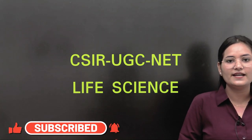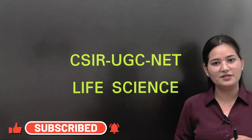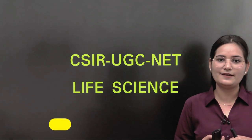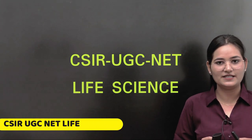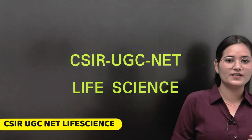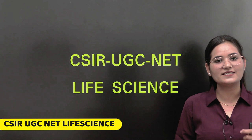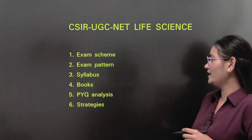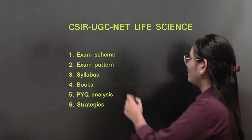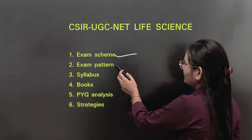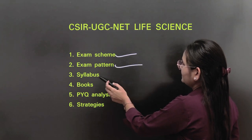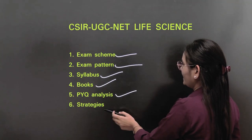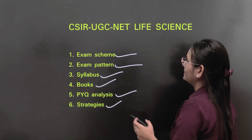CSIR UGC NET is conducted in different domains such as physics, chemistry, life science, and mathematics science. But in this video we will be talking about only CSIR UGC NET life science. We will cover exam scheme, exam pattern, syllabus, books, PYQ analysis, and strategy.